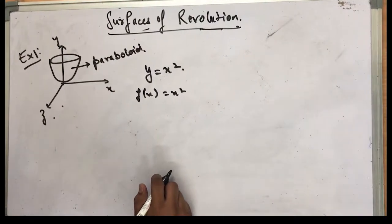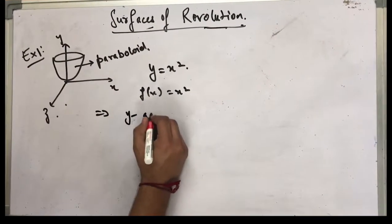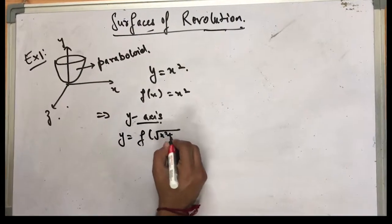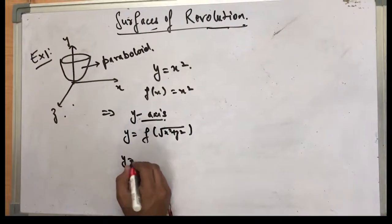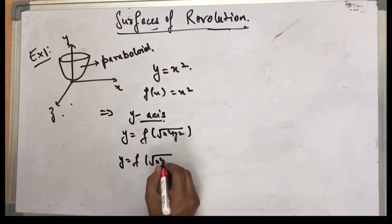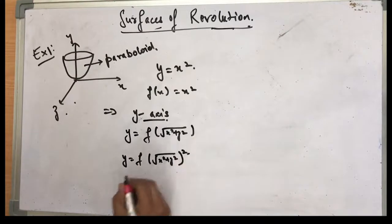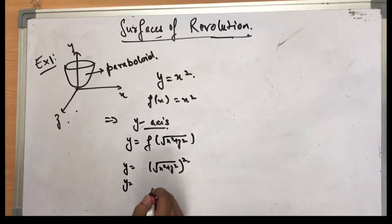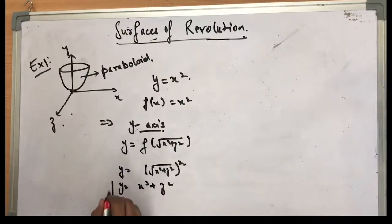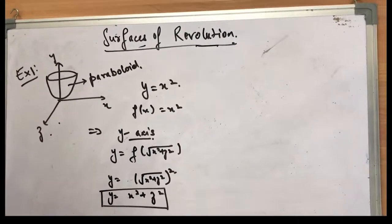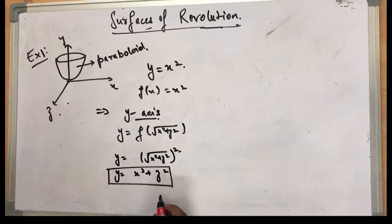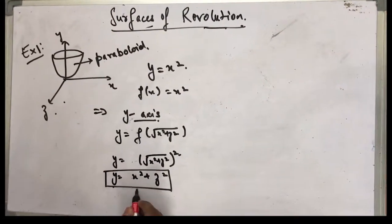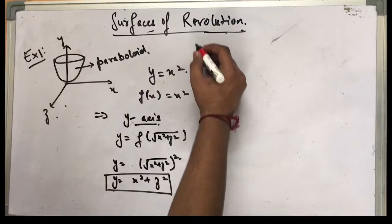Let's find the equation of the surface of this paraboloid rotated about the y-axis. The equation is y = f(√(x² + z²)) = (√(x² + z²))² = x² + z². This is the equation of the paraboloid. We can verify: putting z = 0, which is cutting the cross-section with the xy-plane, we get y = x², which is the original parabola.